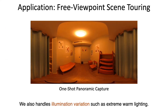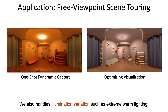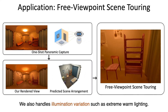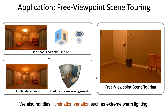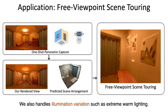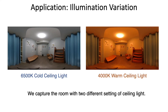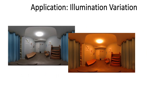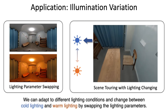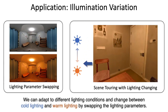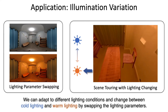We also handle illumination variation such as extreme warm lighting. We can tour in the scene with this warm lighting condition. Then, we capture the room with two different settings of ceiling light. As you can see, we can adapt to different lighting conditions and change between cold lighting and warm lighting by swapping the lighting parameters.